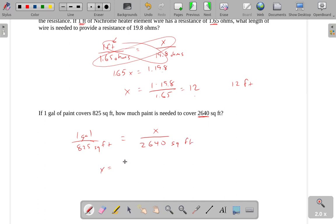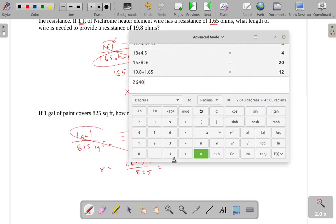All right, X is going to be the product of these. So, 2,640 times 1 divided by 825. I'm skipping through a couple of steps there, but hopefully you can see where I get this from, since we've done a number of these by now. And we get, we should need 3.2 gallons.